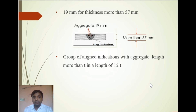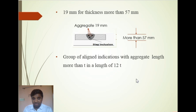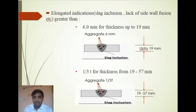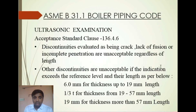For a group of aligned indications, if the aggregate length is more than the thickness (T) and falls within a length of 12T, it is not acceptable. This concludes the radiographic examination acceptance criteria. Next is ultrasonic examination.